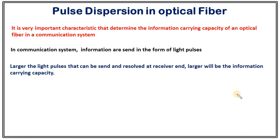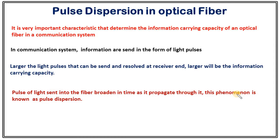Larger the number of light pulses that can be sent and resolved at the receiver end, larger will be the information carrying capacity. How much information is transmitted per second is decided by pulse dispersion. Pulses of light sent in optical fiber get broadened in time as they propagate through it — this phenomenon is known as pulse dispersion. As light gets broadened, after some time two light pulses may overlap and won't be resolvable at the receiver end, and you won't be able to clearly extract the information.